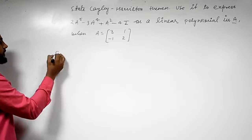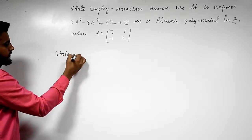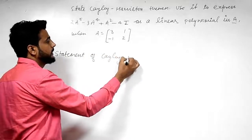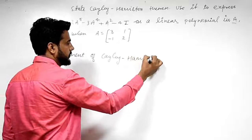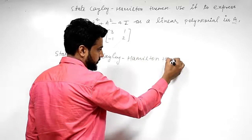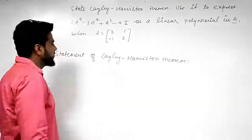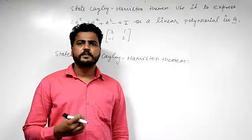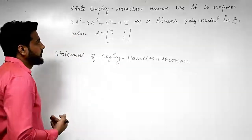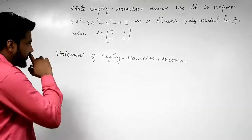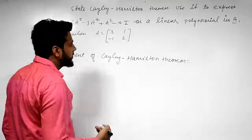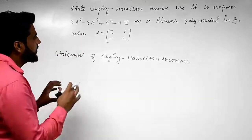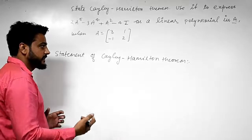The statement of the Cayley-Hamilton theorem is: every square matrix satisfies its own characteristic equation. That means every square matrix, where the number of rows and number of columns are equal, satisfies its characteristic equation.